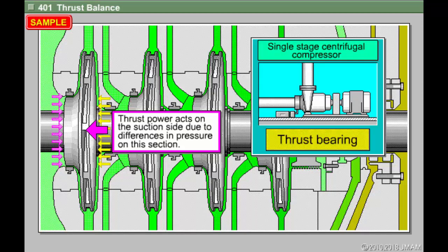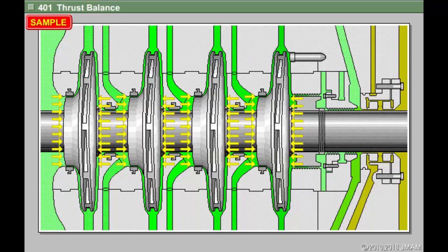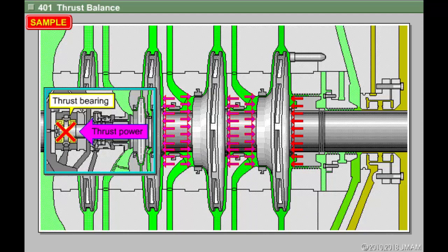The thrust bearings in a single-stage centrifugal compressor suppresses this force. However, in a multi-stage compressor, this thrust power is proportional to the number of stages. It becomes extremely powerful and cannot be suppressed by the thrust bearings.